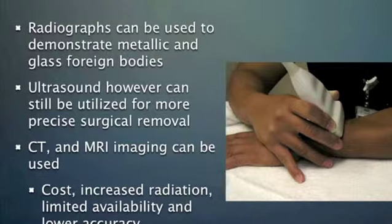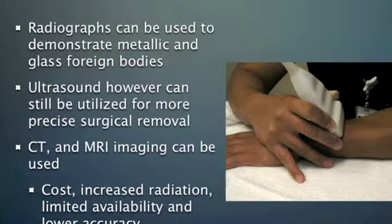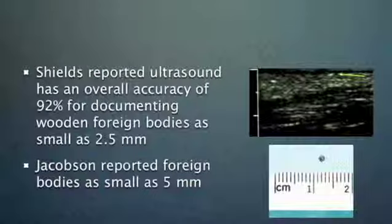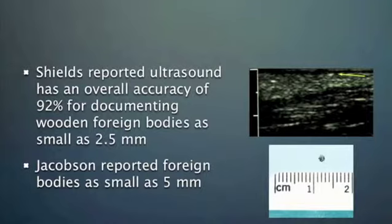CT and MRI can also be used, but there are concerns about cost, unnecessary radiation from CT, and MRI availability — and both have lower accuracy for the actual surgical removal. Shields reported ultrasound has an overall accuracy of 92% for documenting wooden foreign bodies as small as 2.5 mm. Jacobson looked at foreign bodies as small as 5 mm. Hill in Annals of Emergency Medicine had 80 cases — 53 had foreign bodies — and ultrasound detected 44 of 53 with 83% sensitivity, even with operators who described themselves as inexperienced. Wood had very high sensitivity; plastic had 73% sensitivity.